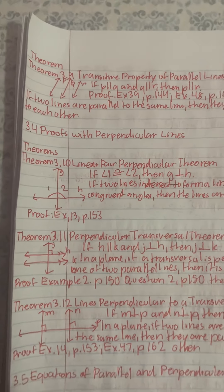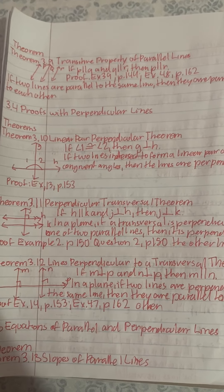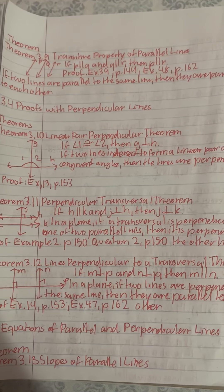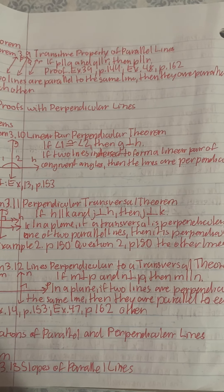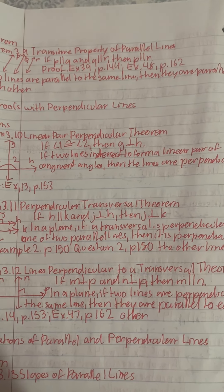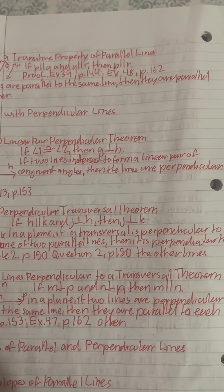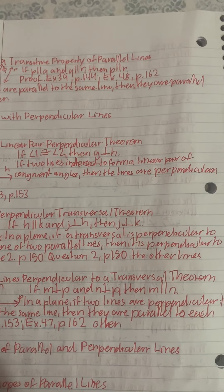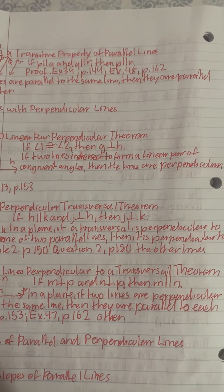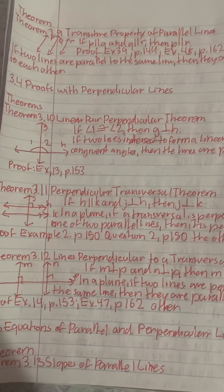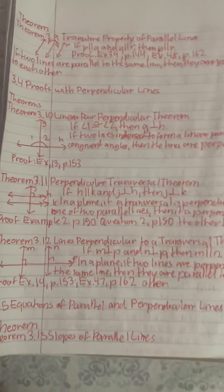3.4 Proving Perpendicular Lines. Theorems. Theorem 3.10, Linear Pair Perpendicular Theorem: If two lines intersect to form a linear pair of congruent angles, then the lines are perpendicular. If angle 1 is equal to angle 2, then the lines are perpendicular. Proof. Example: 13P135.